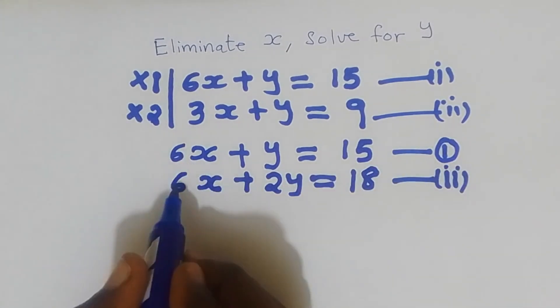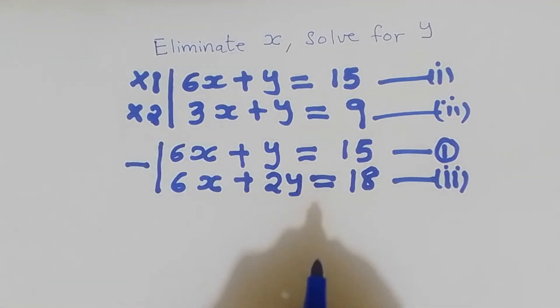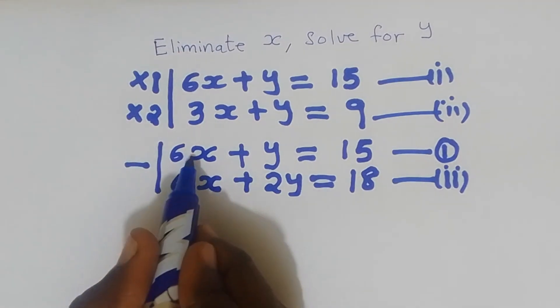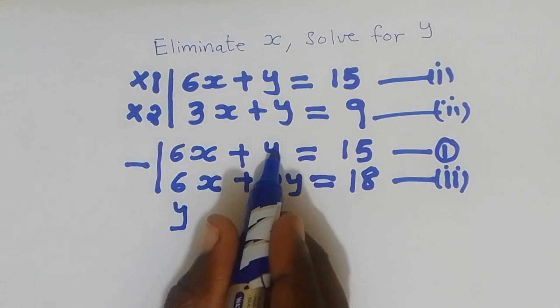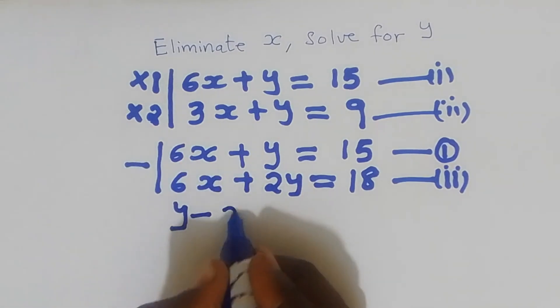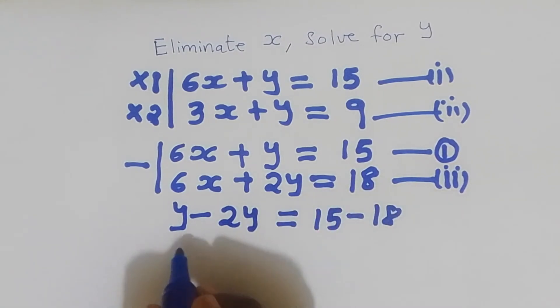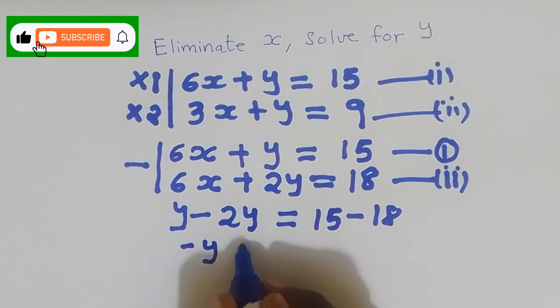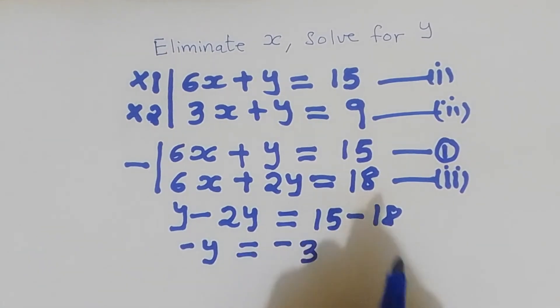So already I make this coefficient, they are the same, 6 and 6. What I'm going to do now is subtract. 6x take away 6x I'm going to remain with 0. y take away 2y, this is equal to 15 take away 18, which is going to give us minus y is equal to minus 3. Divide by negative throughout, we are going to get y is equal to 3.